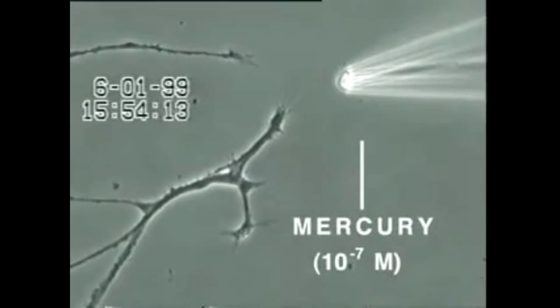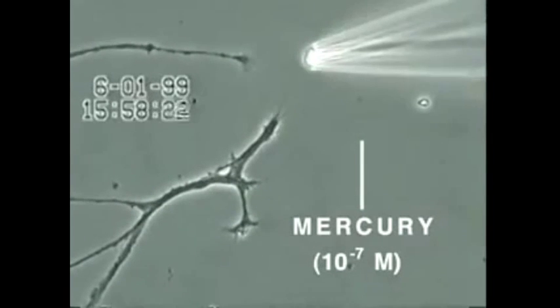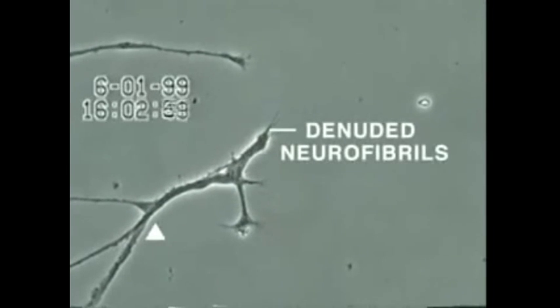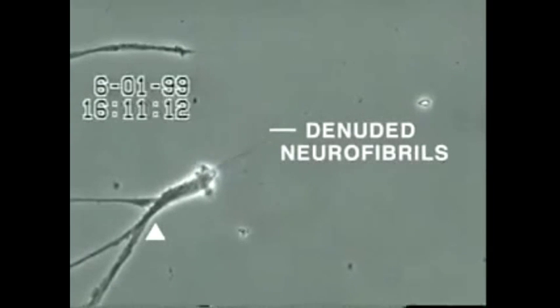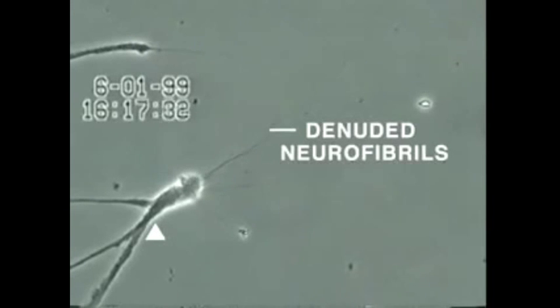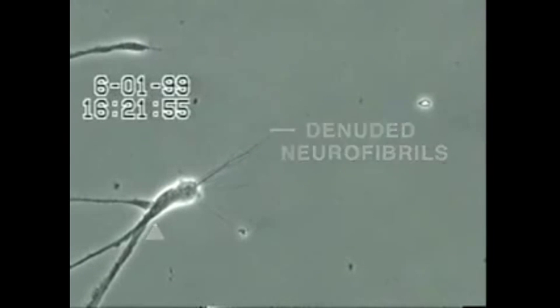Over the next 30 minutes, the neurite membrane underwent rapid degeneration, leaving behind the denuded neurofibrils seen here. In contrast, other heavy metals added at this same concentration, such as aluminum, lead, cadmium and manganese, did not produce this effect.